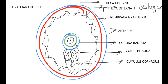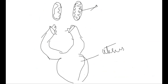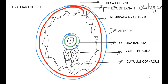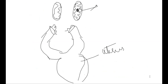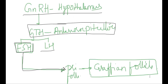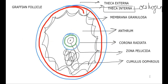The Graafian follicle releases estrogen, which promotes development of secondary sexual characters in females. Next, LH levels begin to increase. This rise in LH leads to the process of ovulation.